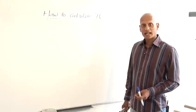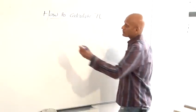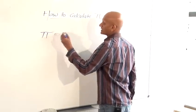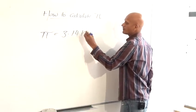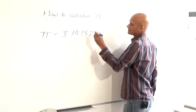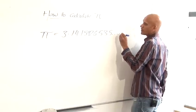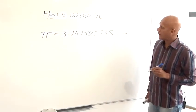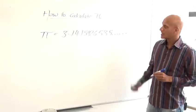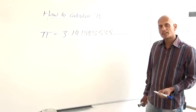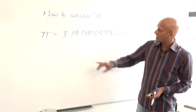So, how do we calculate pi? Well, if you press the pi button on your calculator, you'll find pi is 3.1415926535 and so on. It carries on and on and goes on forever.